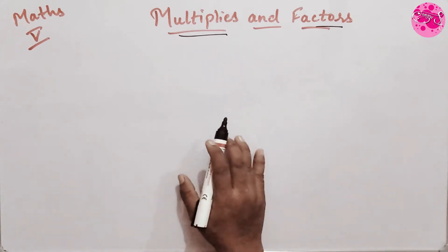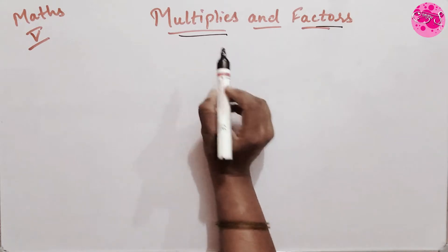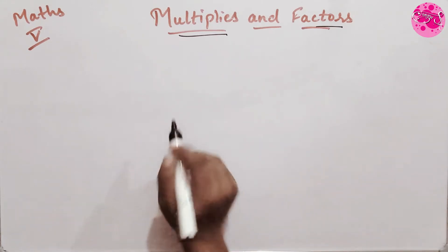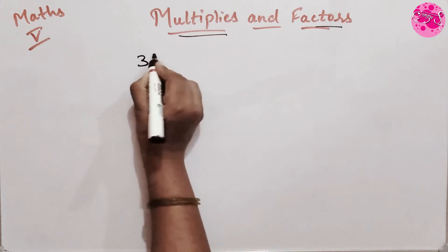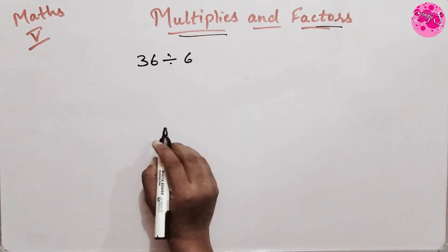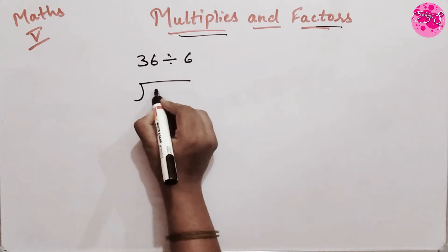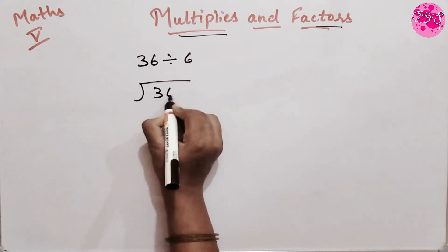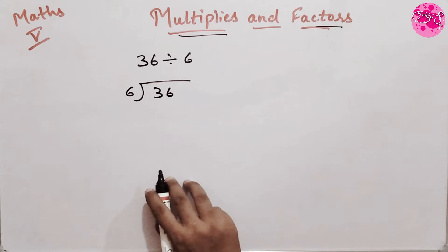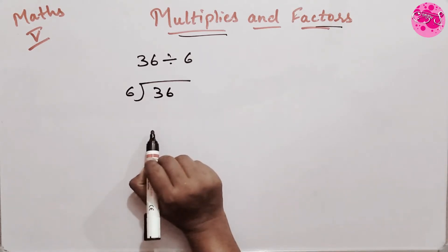So before explaining what multiples are, let's solve a division sum: 36 divided by 6. So here we have to write 36 and here 6. Now in the sixth table, 36 is going to appear.